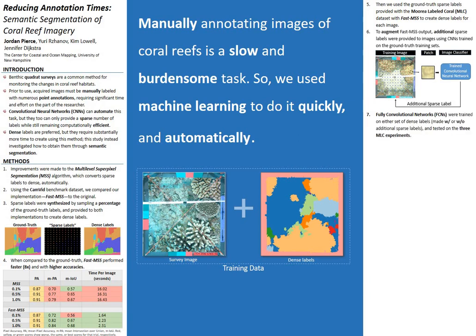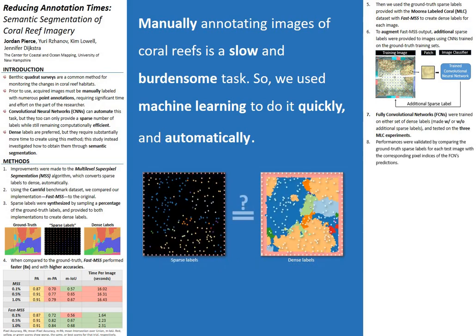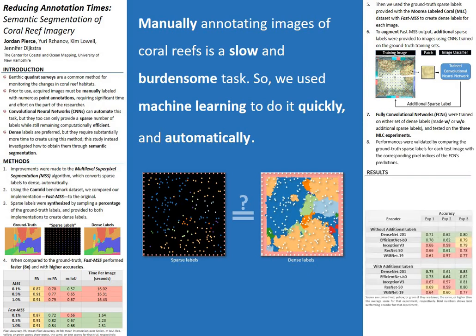We trained multiple FCNs on the dense labels created by FastMSS and validated their performance using the three MLC experiments associated with the benchmark dataset. We quantified accuracy by comparing the ground truth sparse labels associated with each image in the test set against the labels in the corresponding pixel indices of the FCN's predictions for the same image. The classification accuracy for some of the encoders we used can be seen in the table below. We found that the FCNs trained with the additional labels provided by the CNNs performed on average 3% higher in classification accuracy compared to those trained without additional labels.